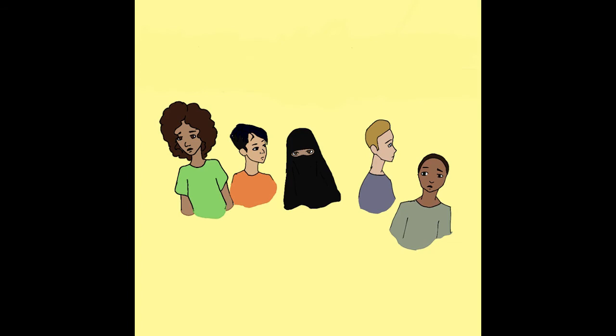Implicit bias is when you associate stereotypes towards a person or a group of people based on their race, skin tone, religion, gender, nationality, body type, and many other things. Implicit bias makes people have a negative or positive attitude towards someone, and it can have a big negative impact when it comes to decision making.